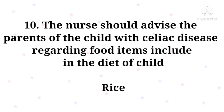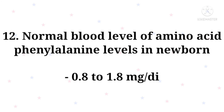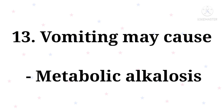The nurse should advise the parents of the child with celiac disease regarding food items included in the diet of the child. Breastfeeding should be started within half an hour after birth of a baby. Normal blood level of amino acid phenylalanine in newborns is 0.8 to 1.8 mg per dL. Vomiting may cause metabolic alkalosis.